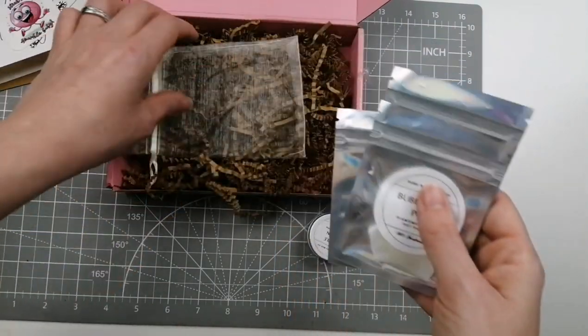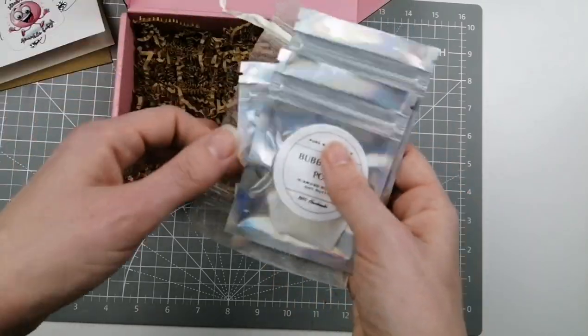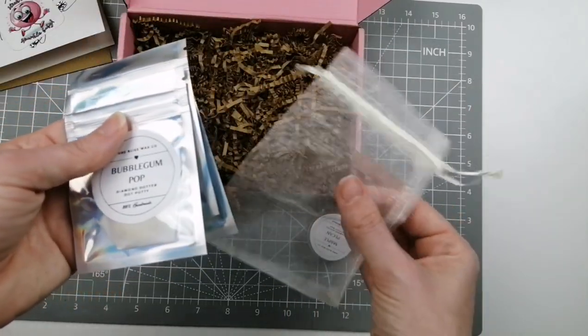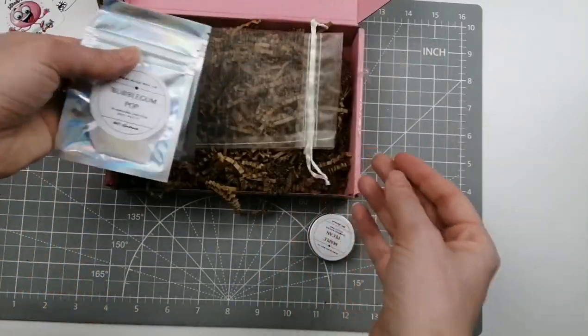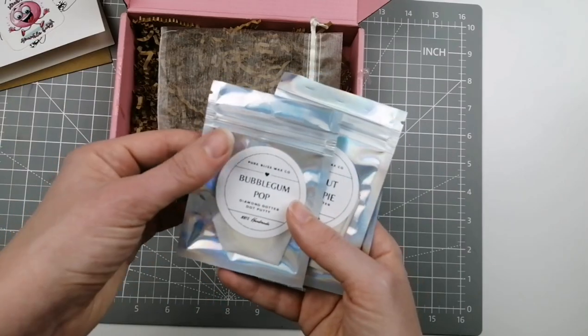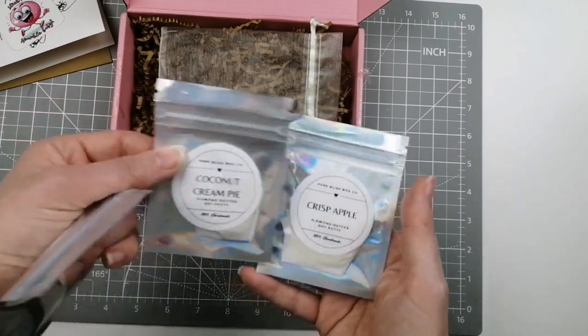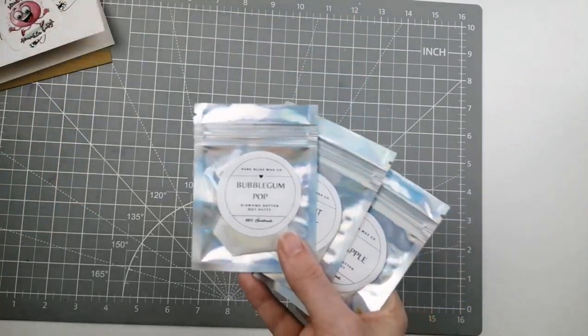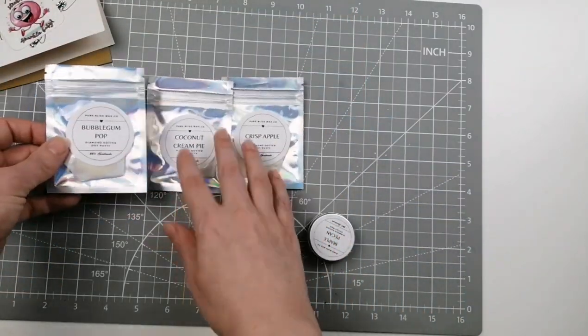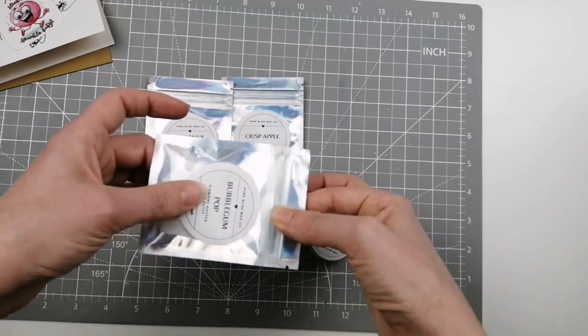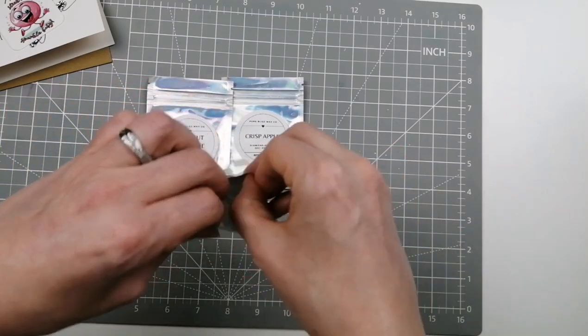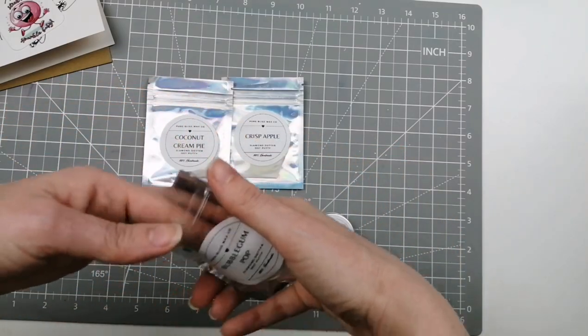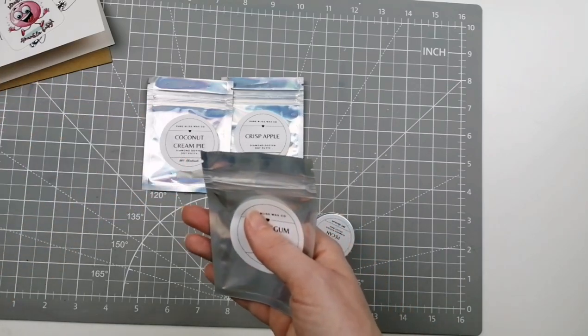I then bought her little three sampler pack. They came in this cute little organza bag and I got bubblegum pop, coconut cream pie, and crisp apple. So those are really amazing beautiful scents. They come in these sealed little baggies. It's better to keep them in there because they will keep fresh and clean and they'll keep their scents better.